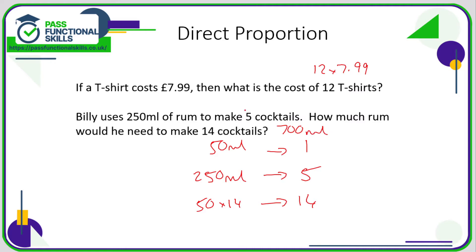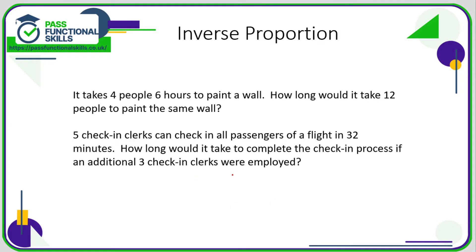So all direct proportion means is: as you increase one amount, the other amount increases as well. Increase the number of cocktails and you increase the amount of rum; increase the number of t-shirts and you increase the price. As one goes up, the other goes up.